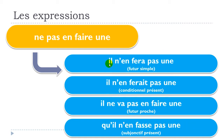One more time — future simple: il n'en fera pas une. Conditionnel présent: il n'en ferait pas une. Future proche: il ne va pas en faire une. Subjonctif présent: qu'il n'en fasse pas une.